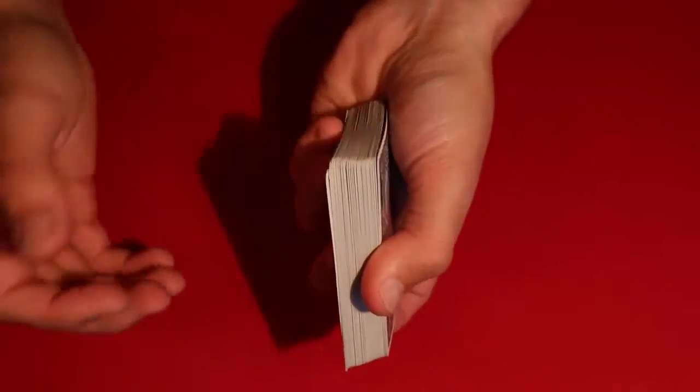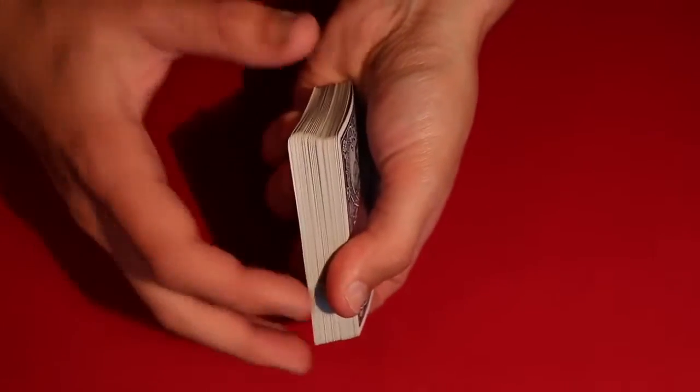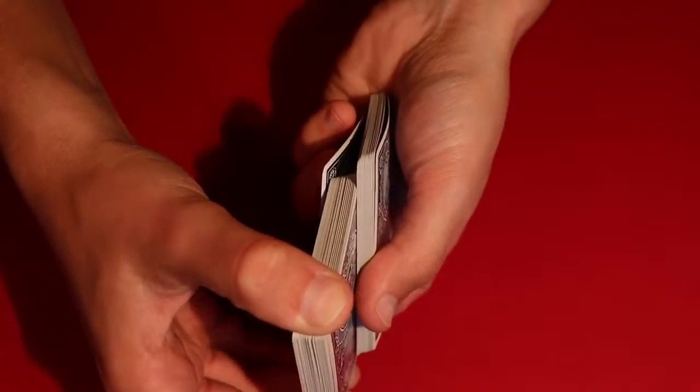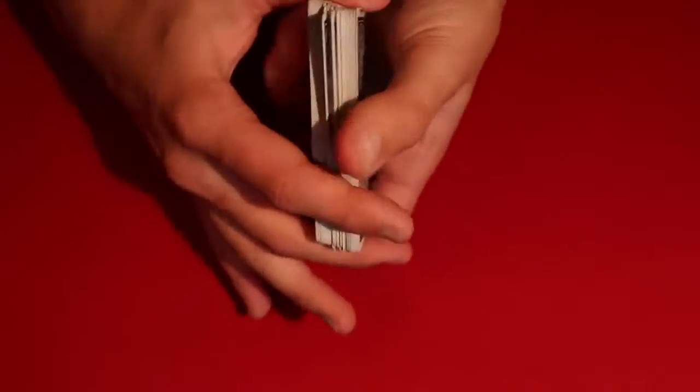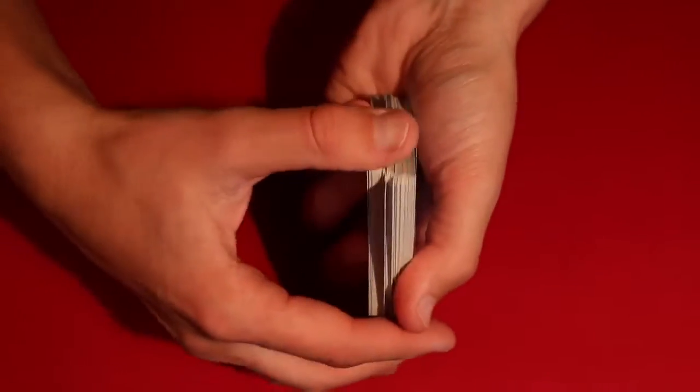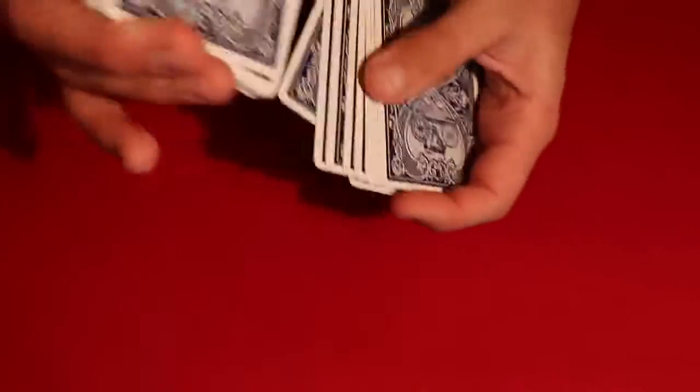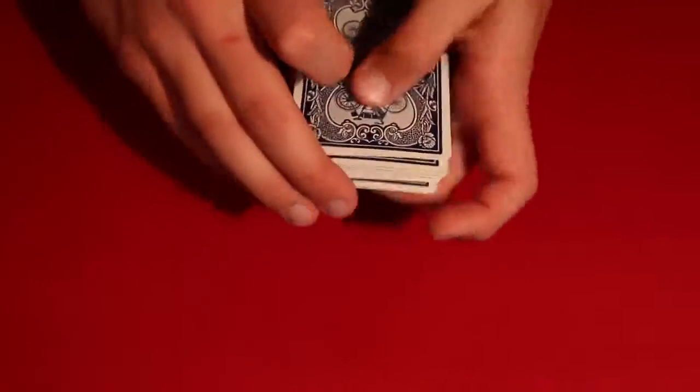Looks like this, so you're doing a normal overhand shuffle except for you're holding on to the bottom card right there with your three fingers and it's going to stay on the bottom. And you keep doing that about three or four times. The spectators are not going to really notice you holding on to that bottom card throughout the entire shuffle. So you can do this like I said three or four times.